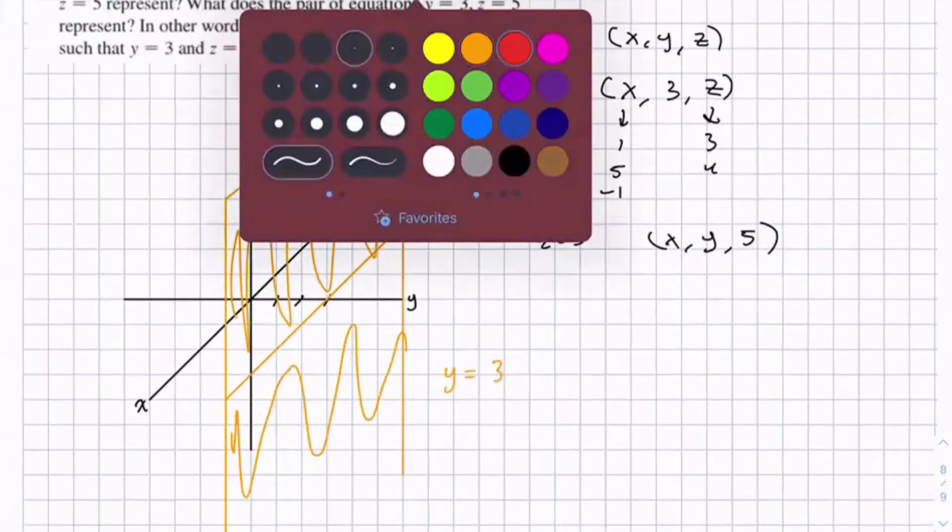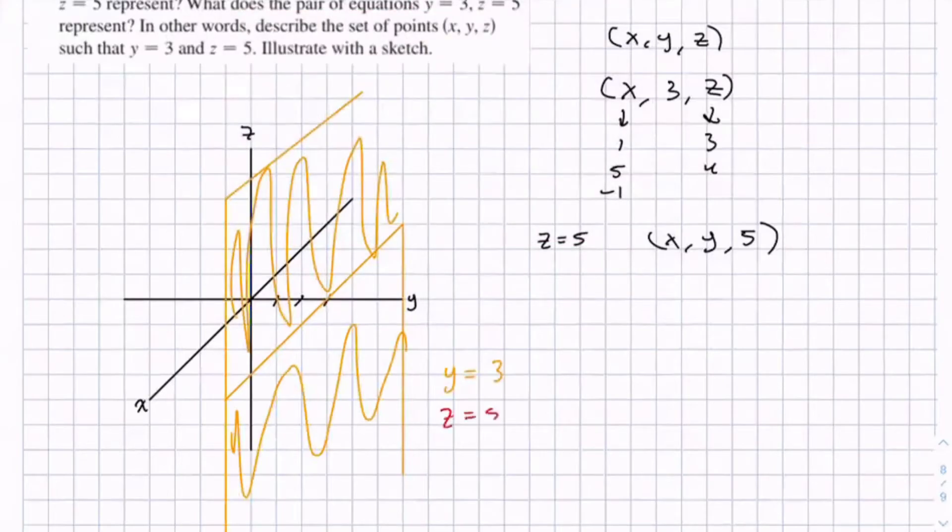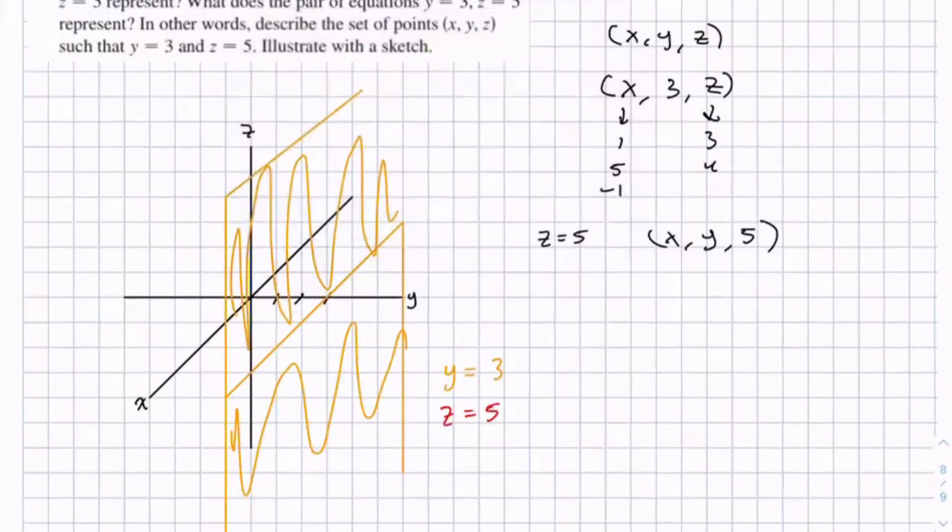Then for z equals 5, that creates another plane. So z equals 5 here.